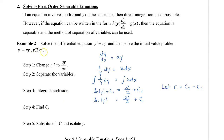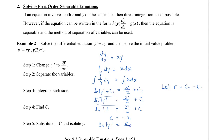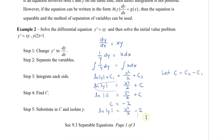Now we're going to find c by plugging in x equals 2 and y equals 1. From here we can see that c equals: the natural log of 1 is 0, and 2 squared divided by 2 is 2, so c equals negative 2. We substitute c back into the equation and then isolate y. We take e of both sides, which gives y on its own equal to e to the power of x squared over 2 minus 2.